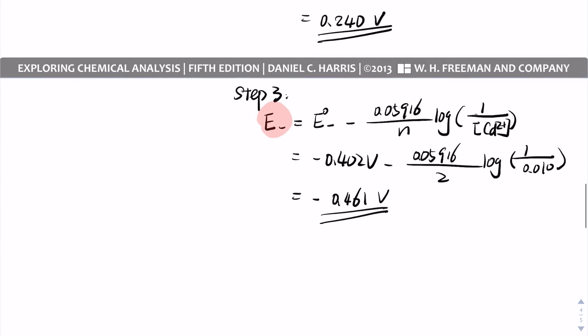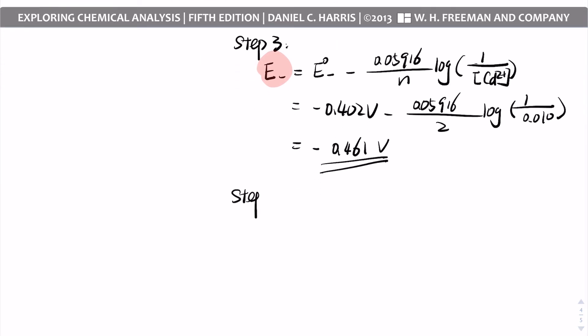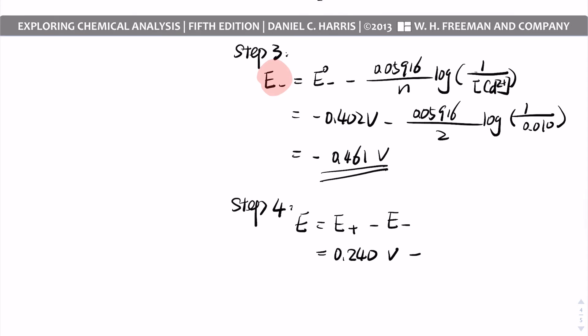Step 4: Calculate the whole cell voltage. The cell voltage equals E+ minus E−, so 0.240 V minus (−0.461 V) equals positive 0.701 volts. Since the cell voltage is positive, this is a spontaneous reaction in the forward direction.